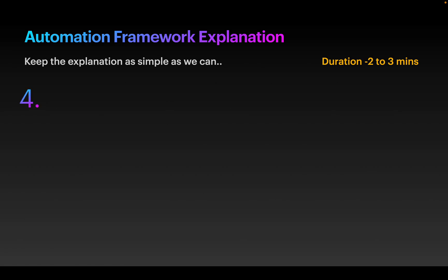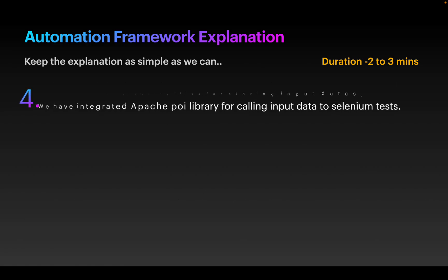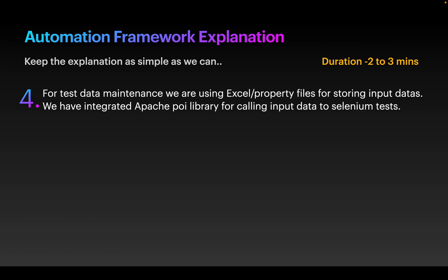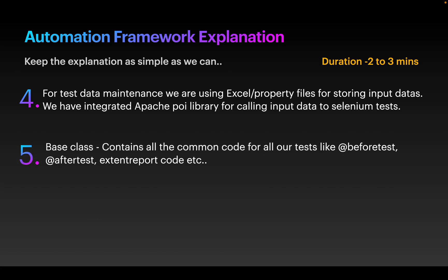The next item is test data maintenance — what you are doing for that. You might use Excel or property files, so explain how you are maintaining test data and what dependencies you are using. For example, if you are using Excel, you might use Apache POI libraries — explain about that as well.